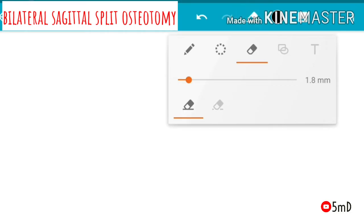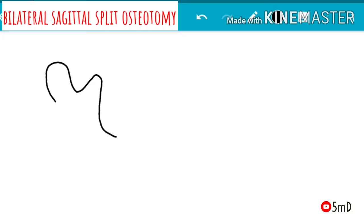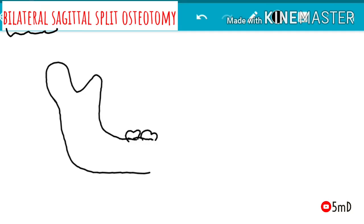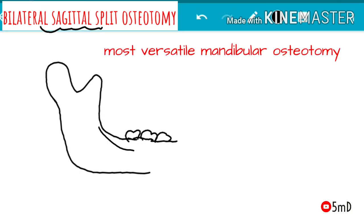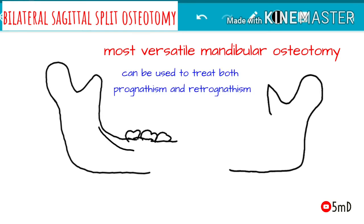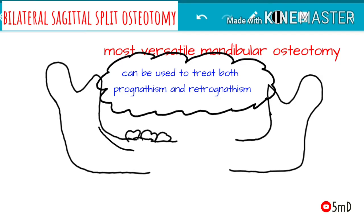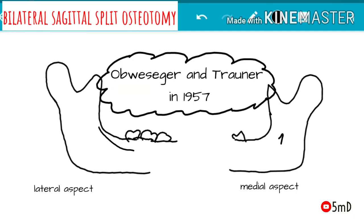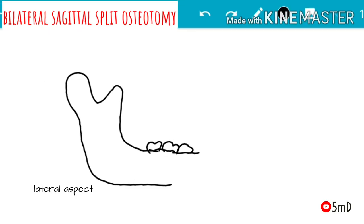Today let us see about a mandibular orthognathic surgery — Bilateral Sagittal Split Osteotomy, shortly known as BSSO. As the name suggests, it is done on both the right and left side of the mandible. The split of the mandible is done from the front towards the back in a sagittal direction. It is the most versatile mandibular orthognathic surgery, which can be used for both prognathism and retrognathism. Though it was first introduced in 1957, over the years BSSO has undergone many modifications.